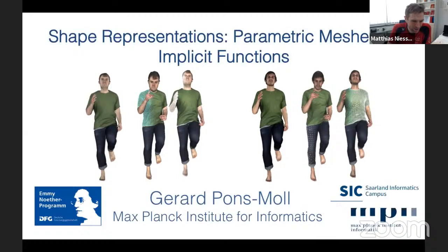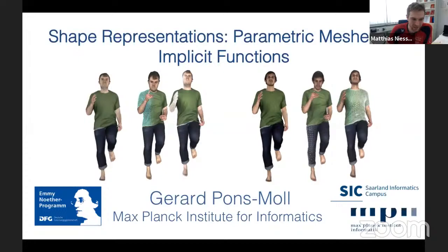Welcome everybody after the ECCB break to our TUM AI lecture series. Today it's a pleasure to have Jarrah Ponsmall here. Jarrah is heading the research group at the Max Planck Institute that handles real virtual humans. He's basically trying to digitize humans from real data — reconstructing them, tracking them, looking at cloth and representations. In short, he's a pioneer in how we can build digital replicas of ourselves, with an amazing academic record including top-tier papers at CVPR, ECCV, ICCV, and SIGGRAPH.